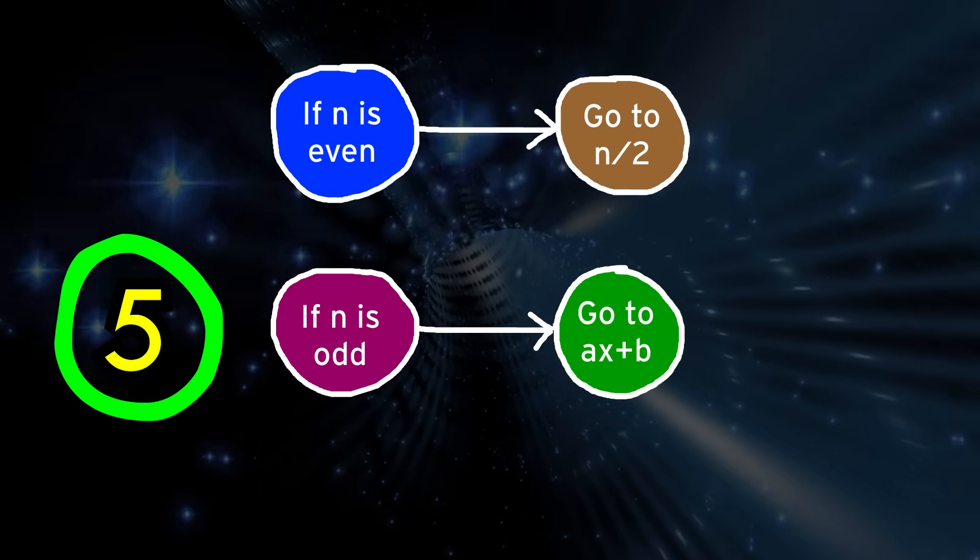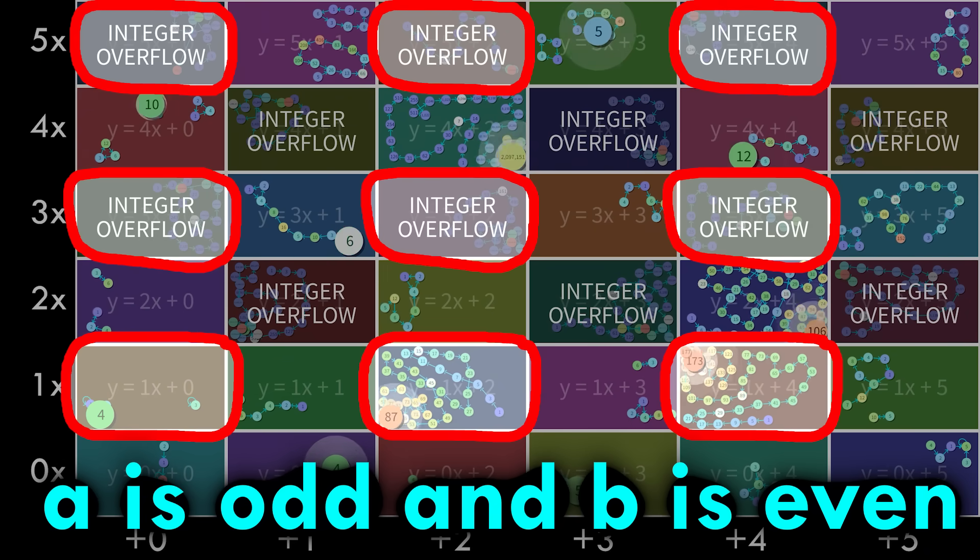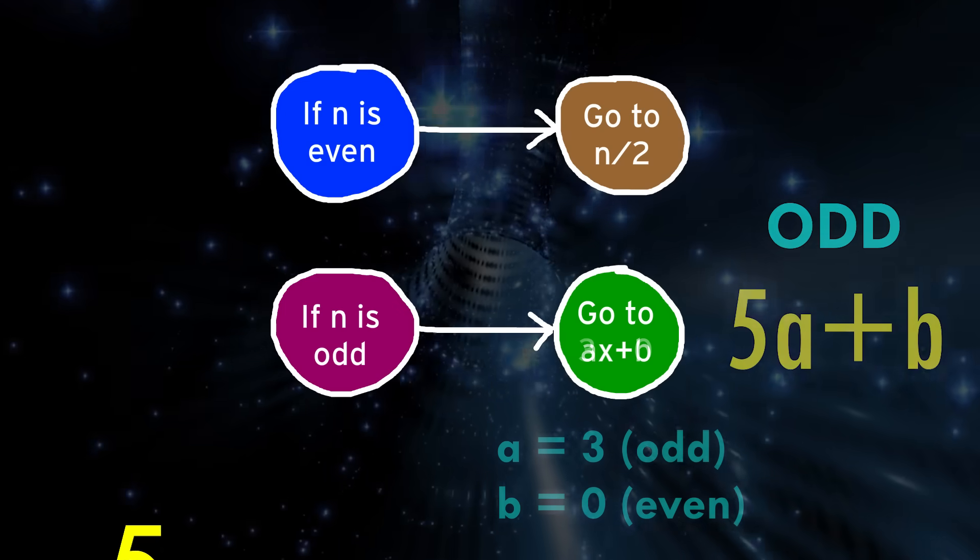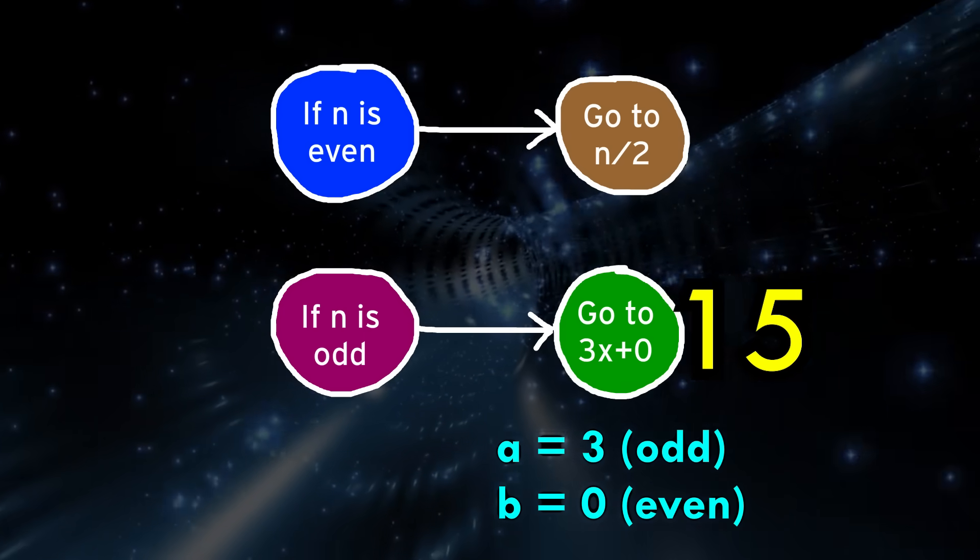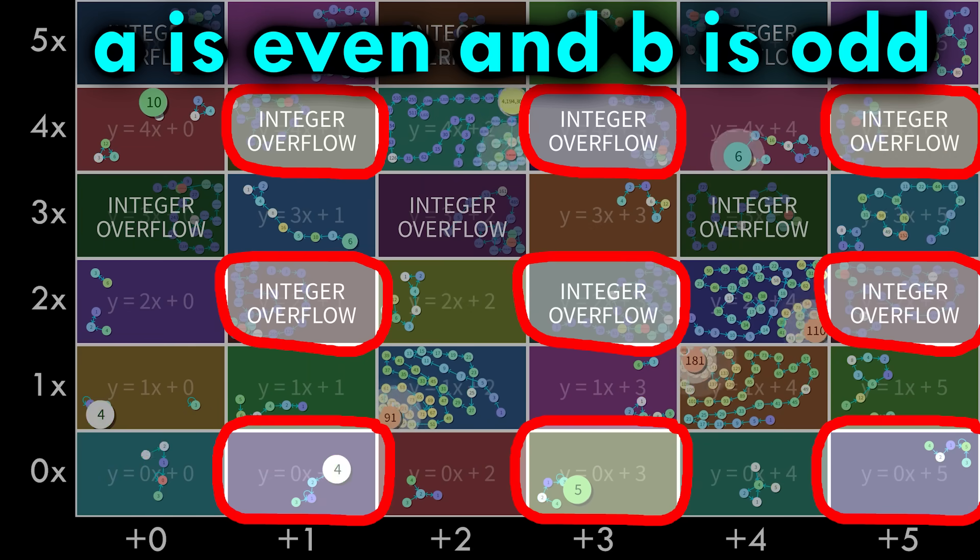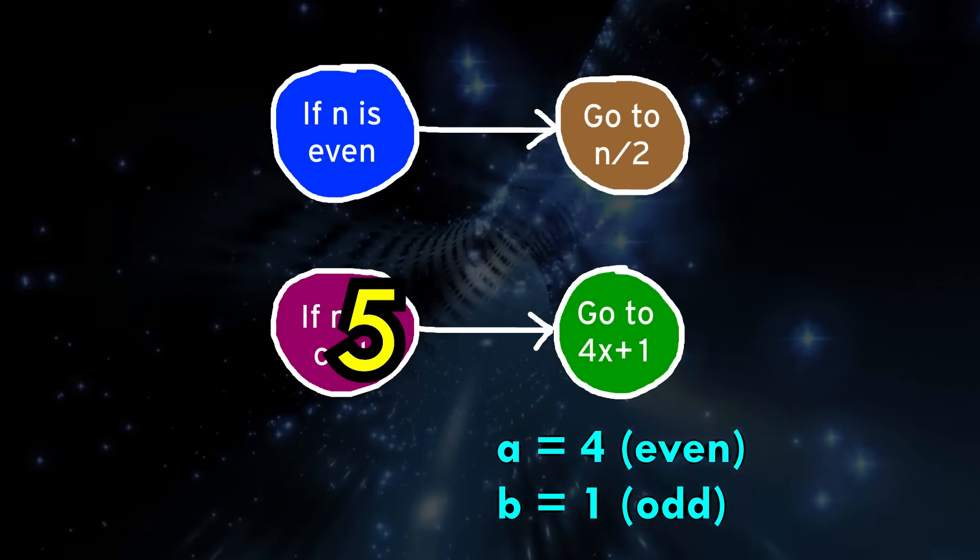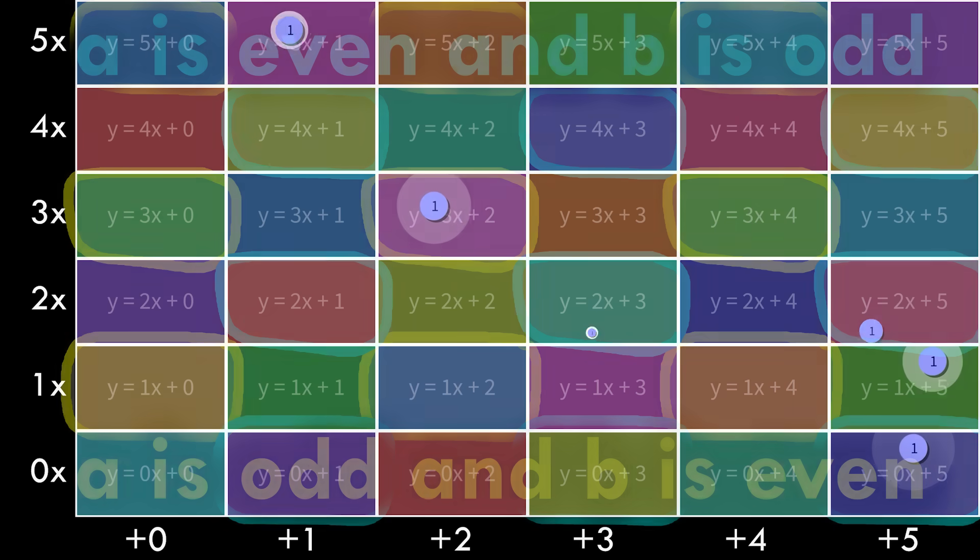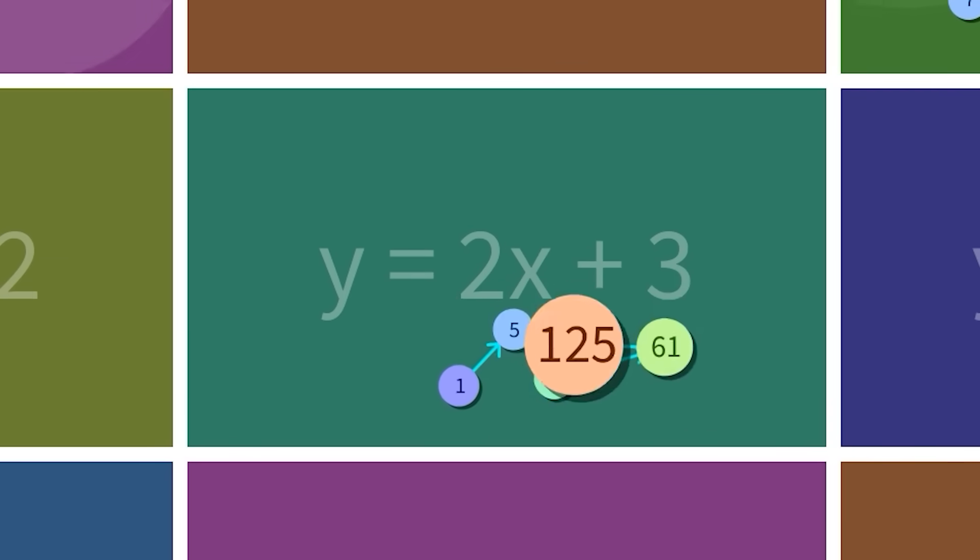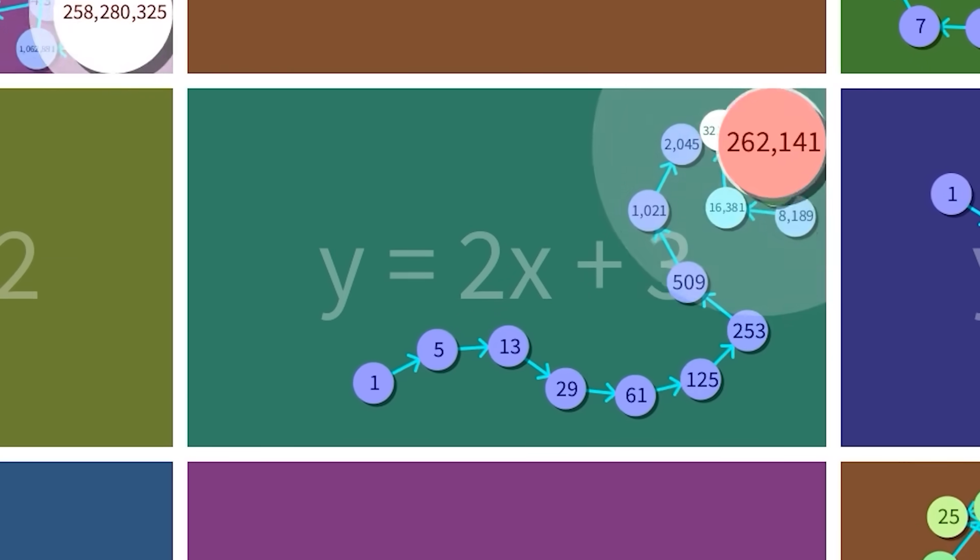But hold on, to even get to this case, x must be odd. So if a is odd, and b is even, like in these universes, the final sum is guaranteed to be odd, like how 3 times 5 plus 0 is 15. And if a is even, and b is odd, like in these universes, the final sum is also guaranteed to be odd, like how 4 times 5 plus 1 equals 21. So when you're in these universes, and you stumble upon an odd number, you will only ever reach larger and larger odd numbers, and you'll never reach an even number that could bring you back down.